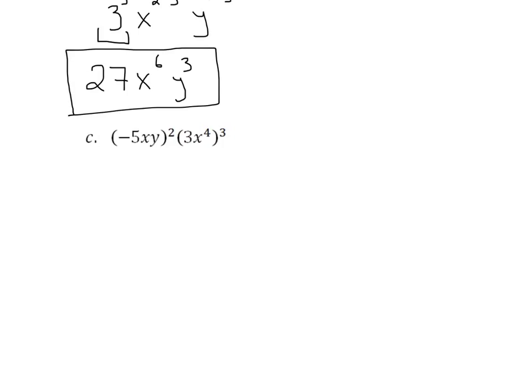So it's going to be negative 5 squared x to the 1 times 2, because there's just an exponent of 1 up here. And then, again, y to the 1 times 2.